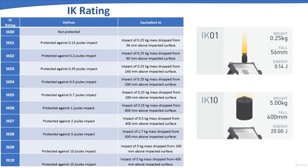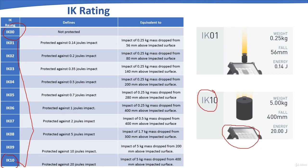IK rating is the degree of protection provided by enclosures against external mechanical impacts. The IK rating scale runs from IK00 up to IK10, as shown in the table. For example, an object with a rating of IK10 means that a foreign object weighing 5kg falling from 400mm with an energy of 20 joules will still not cause damage — the object can withstand this mechanical impact and will be protected.